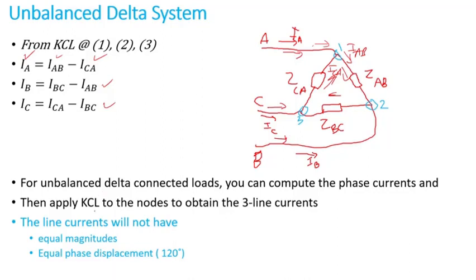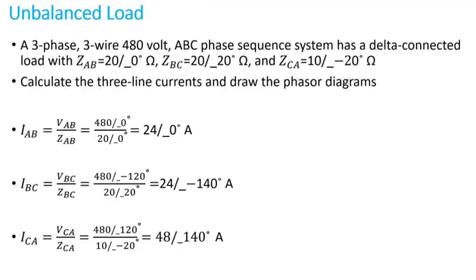What you will see under unbalanced situations is you will have unequal magnitudes and the phasors will not be displaced by 120 degrees like they do when you have balanced conditions. So here is a simple example: we have a three-phase, three-wire, 480 volt ABC phase sequence system with a delta connected load.